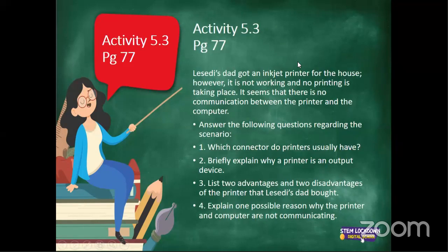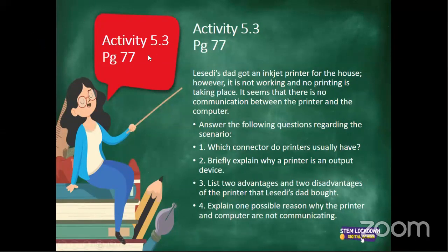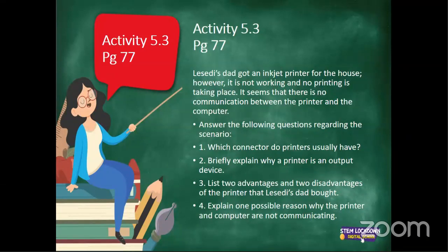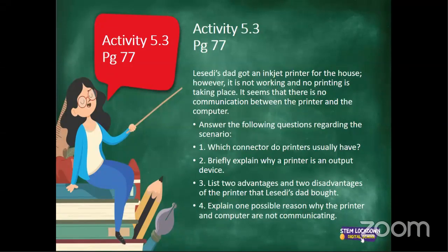Now I think it's time for me to entertain questions. But first, let me show you that we've got an activity — that's Activity 5.3 from your book that I shared yesterday on the link. The scenario is: you've got an inkjet printer for the house, however it is not working — no printing is taking place and there seems to be no communication between the printer and the computer. Answer the following questions: Which connector does the printer have? Briefly explain why a printer is an output device. Give two advantages and two disadvantages of the printer. Explain one possible reason why the printer and computer are not communicating.